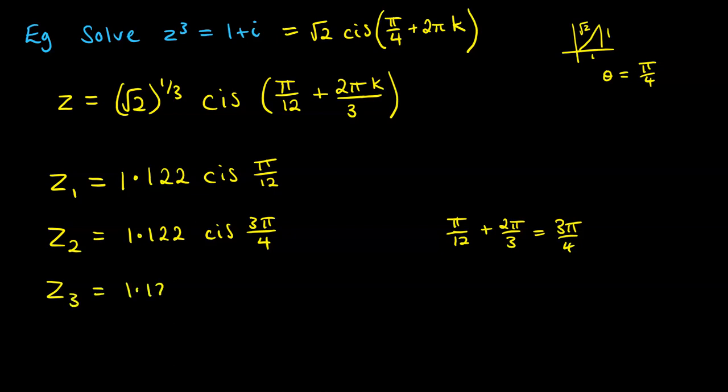And our final solution, z3, is 1.122 cis, and this time we're adding on, so from our original π/12, we'll add on 2 lots of 2π/3. So we'll add 4π/3 to this one, which gives us 17π/12. And if the answer wanted you to leave your answers in rectangular form, you'd need to convert all of those back into rectangular form as well.